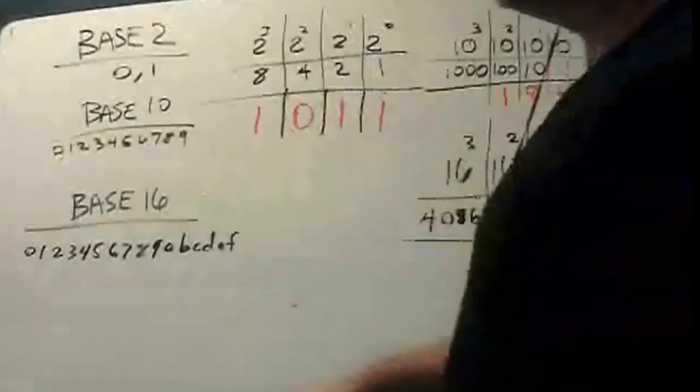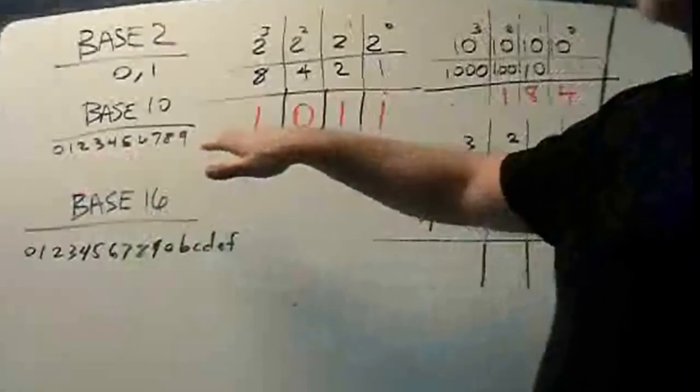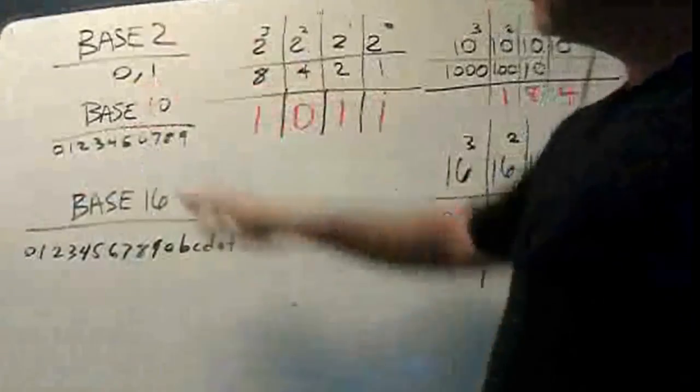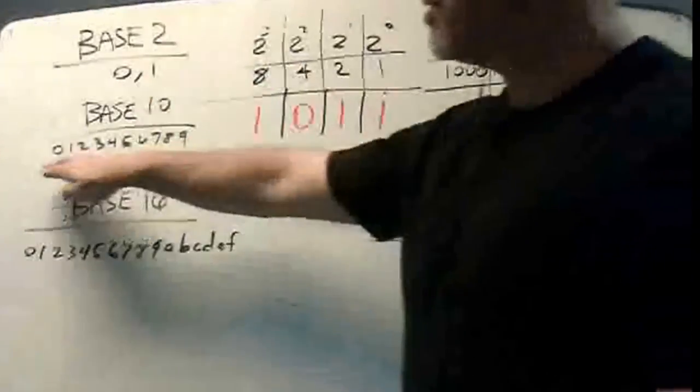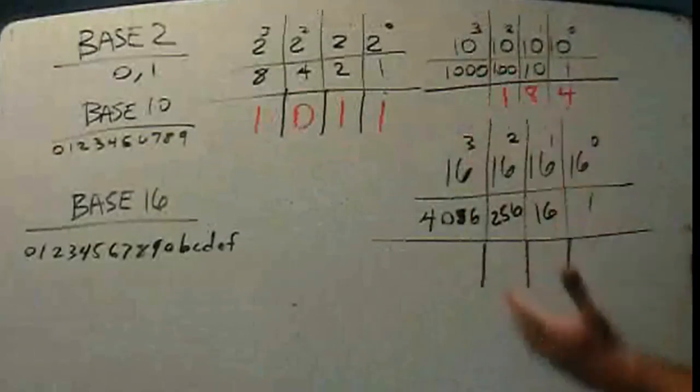But in base 10, we have 10 different characters, 0, 1, 2, 3, 4, 5, 6, 7, 8, 9. So base 2, 2 characters, 0 and 1. Base 10, 10 characters, 0 to 9. And so over here, you can see that I've plugged in those characters.